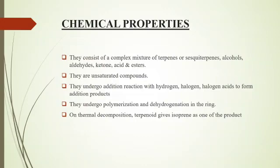The chemical properties of terpenoids: they consist of a complex mixture of terpenes or sesquiterpenes, alcohols, aldehydes, ketones, acids, and esters. They are unsaturated compounds. They undergo addition reactions with hydrogen, halogens, and halogen acids to form addition products. They undergo polymerization and dehydrogenation in the ring. On thermal decomposition, terpenoids give isoprene as one of the products.